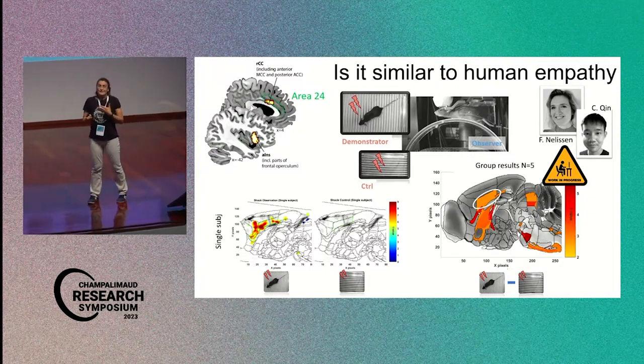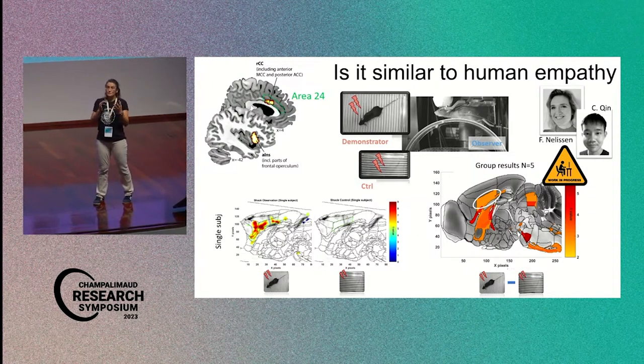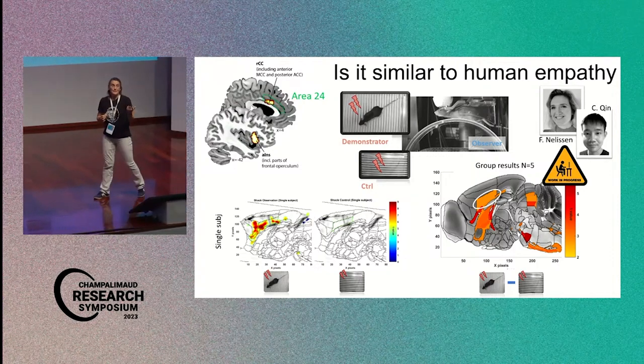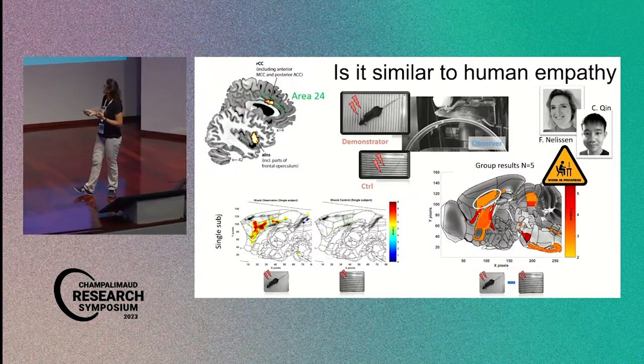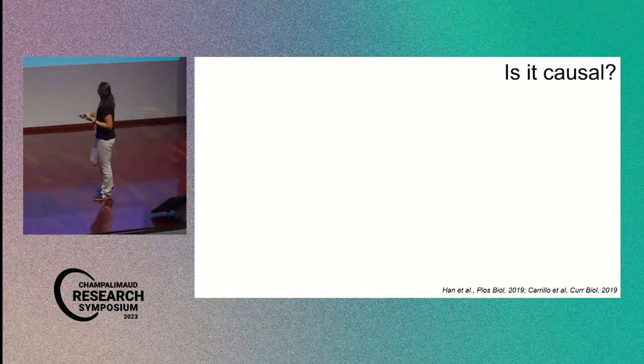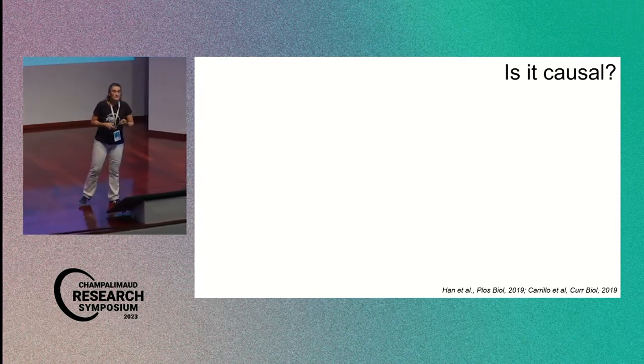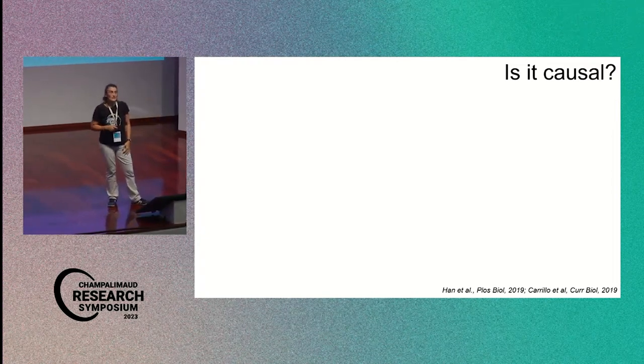And here is just the direct comparison and the group results. So it is promising, at least now we have a means to have a more direct comparison between the circuit in rodents and that in humans.